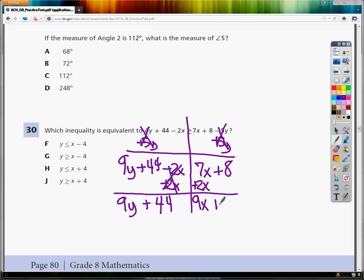Now I still have y not by itself on the left side, so I need to get rid of plus 44. So I need to subtract 44. I need to do that from the 8, because it doesn't have an x.